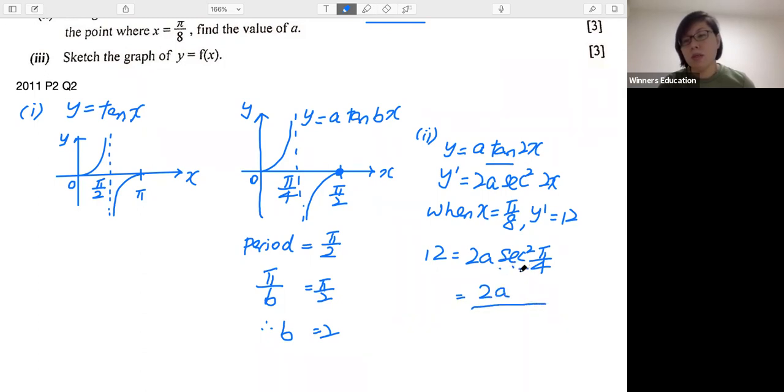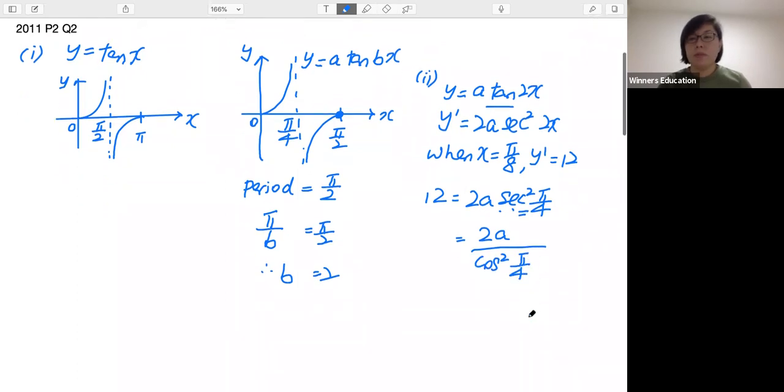And then we want to change our sec² to 1 over cos². So it's 2a times 1 over cos²(π/4). Therefore, with that information, we can cross multiply to find a.